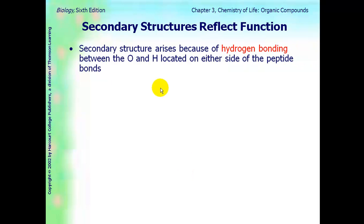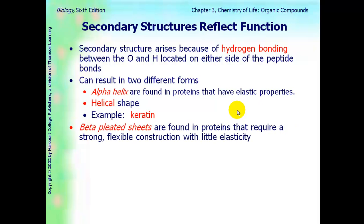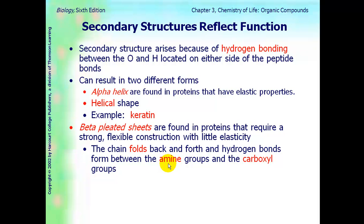Secondary structure arises because of hydrogen bonding between oxygens and hydrogens. It can result in two different shapes of the protein. It can be helical, which is called alpha helix. And these type of proteins are elastic, like keratin. Or it can be strong and flexible and have like a folding within it. The chain is actually folding back and forth, and that's due to amine groups and the carboxyl groups, or these hydrogen bonds. And for example, that is silk protein.